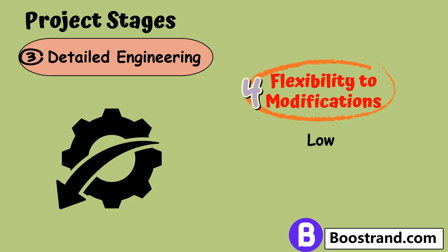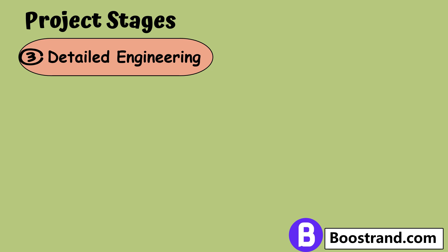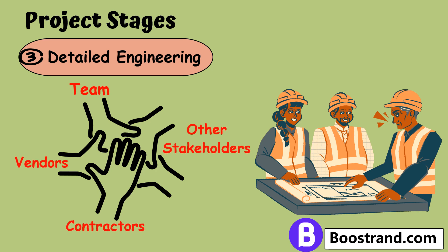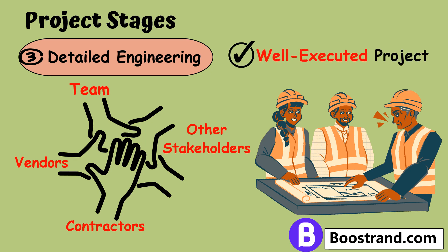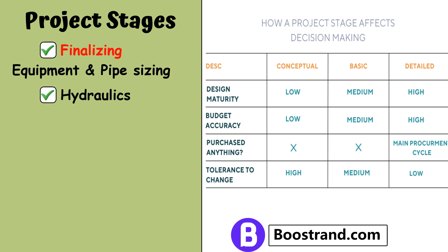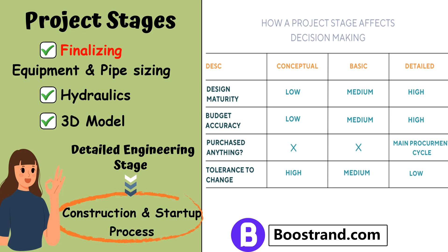Any change in the detailed engineering stage can affect the project cost and cause delays. This stage requires close collaboration among the project team, equipment vendors, construction contractors, and other stakeholders to ensure that the final design meets all technical, safety, and regulatory requirements. The resulting deliverables serve as the basis for the procurement, construction, and commissioning of the plant. With a focus on finalizing equipment and pipe sizing, hydraulics, and developing a comprehensive 3D model, the detailed engineering stage sets the stage for a successful construction and start-up process.